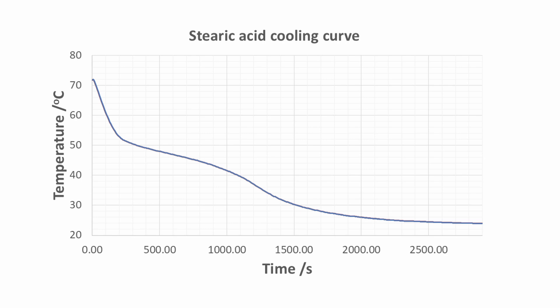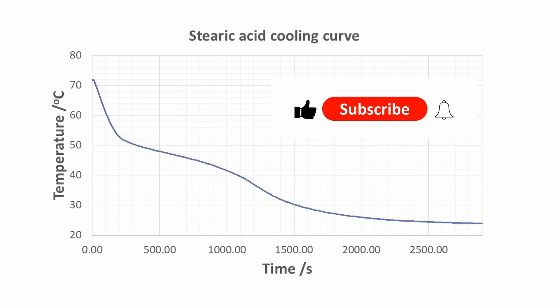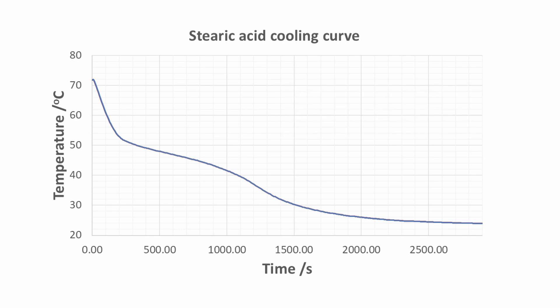Cooling curves like this one can be used to work out the melting points of a substance and the rate of cooling at different points in time. You may have noticed that I have not started the scale on the y-axis with a temperature equal to 0 degrees Celsius — I have started at 20 degrees Celsius. This means that I am using as much space as possible to show the data points. When you plot graphs, ensure that your data points, not the axes, take up at least half of the graph paper.